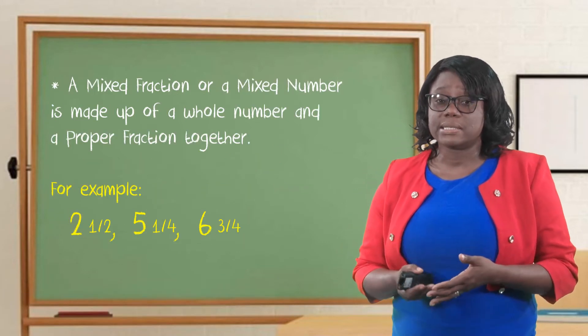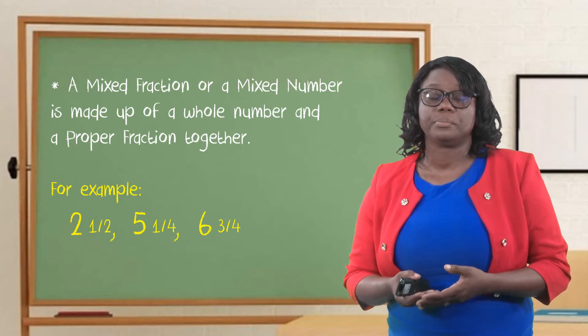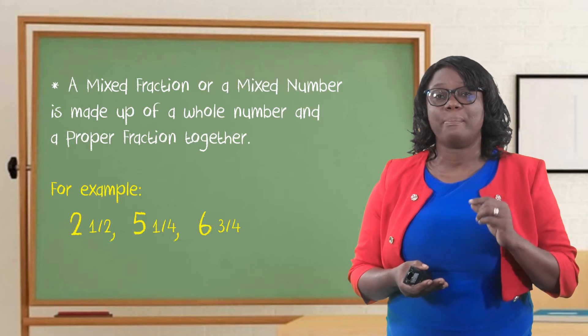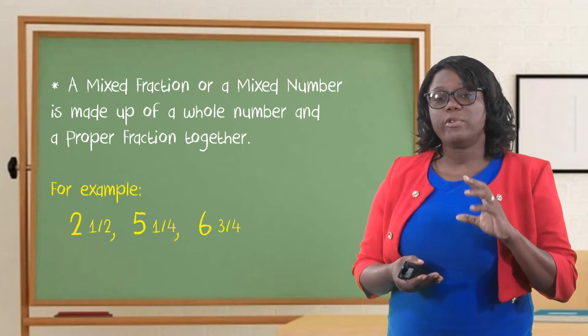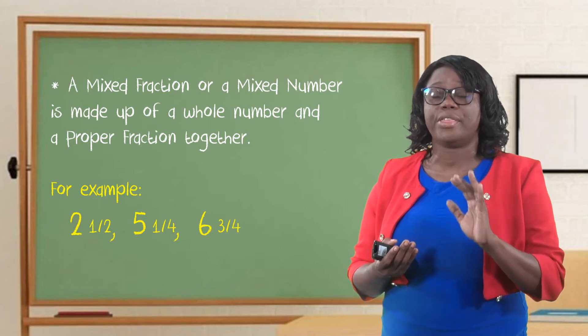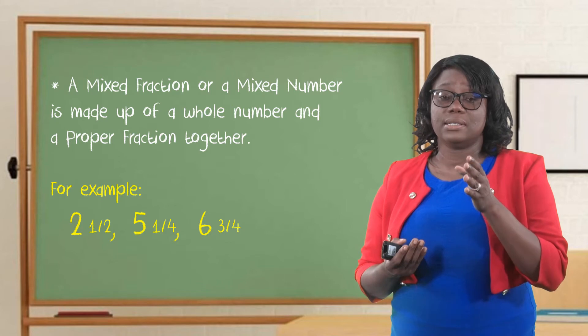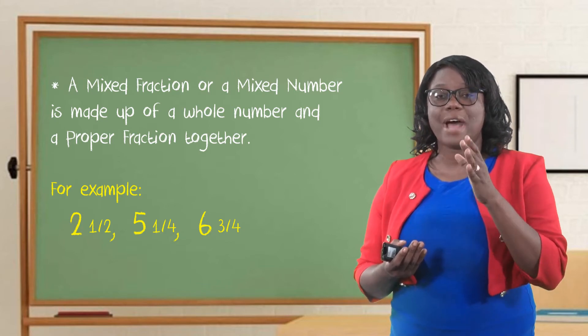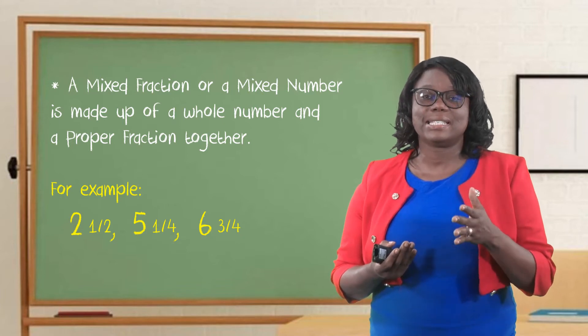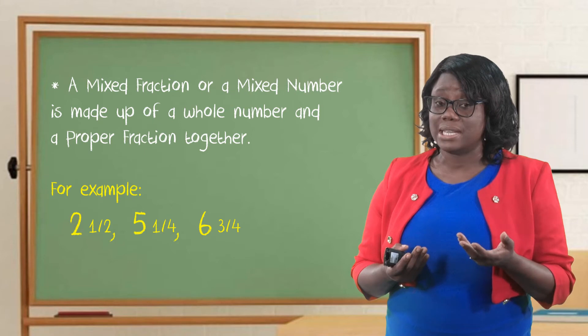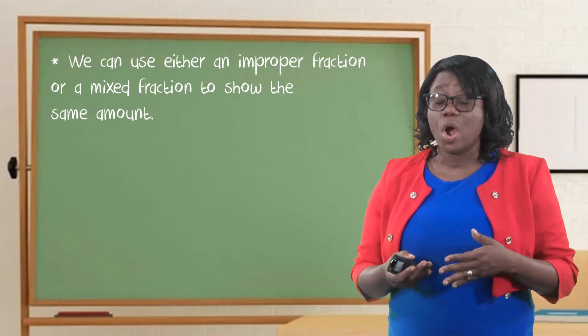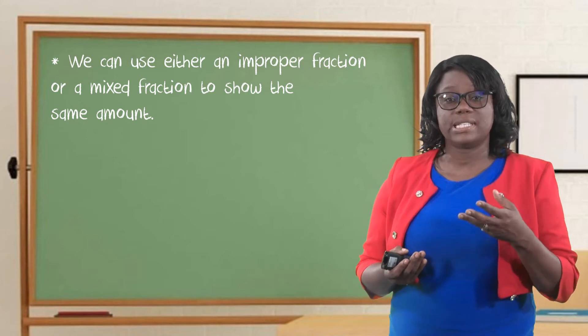We will now move to the mixed fraction or the mixed number. A mixed fraction or a mixed number is made up of a whole number and a proper fraction together. When we're writing a mixed fraction or a mixed number, the whole number is always written bigger than the fraction. Example: two-and-one-half, five-and-one-fourth, or we can say five-and-a-quarter, six-and-three-fourths, or we can also say six-and-three-quarters. We can use either an improper fraction or a mixed fraction to show the same amount.